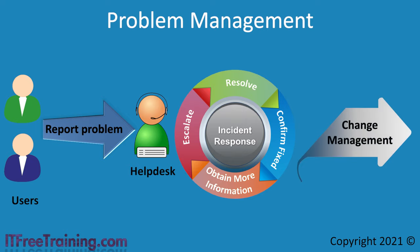Many organizations have a change management process. Change management involves making a controlled change — for example, modifying a firewall rule. The change is reviewed to ensure it won't cause other problems. Change management also includes a contingency: information about what to do if something goes wrong. In the case of a firewall, the contingency may be as simple as reverting the rule back to what it was. Fixing the problem through change management may take time, so a good IT technician will think outside the box to get around the problem without necessarily fixing it.